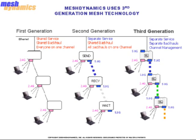First generation mesh nodes have one radio per node to perform all wireless functions, including sending and receiving traffic to and from wireless clients, as well as other mesh nodes. Since there is only one radio to perform these functions, all clients and nodes must be on the same channel.